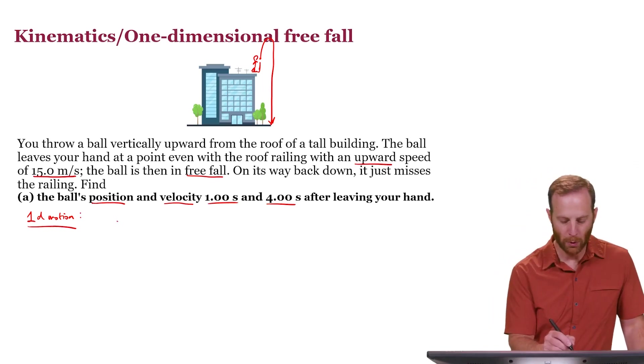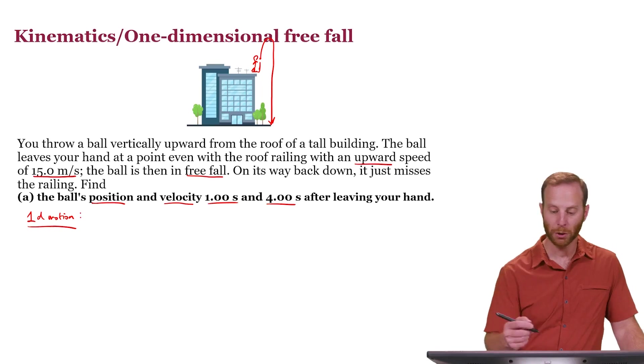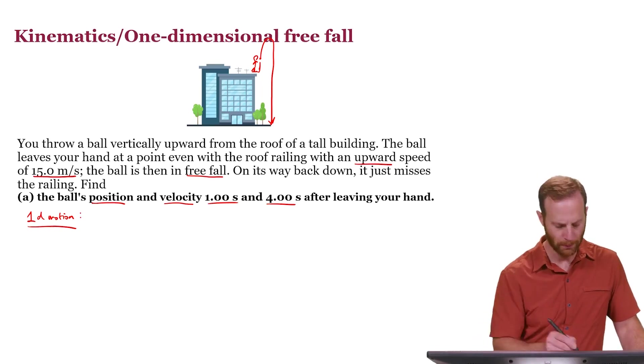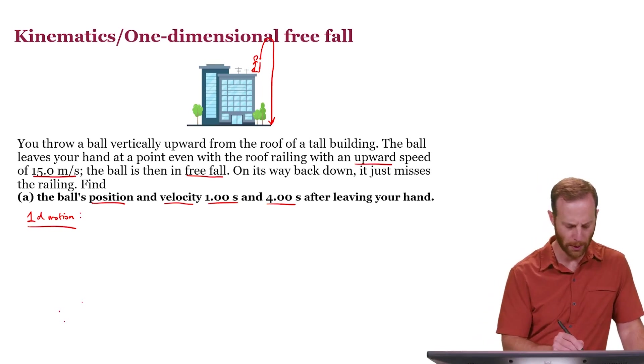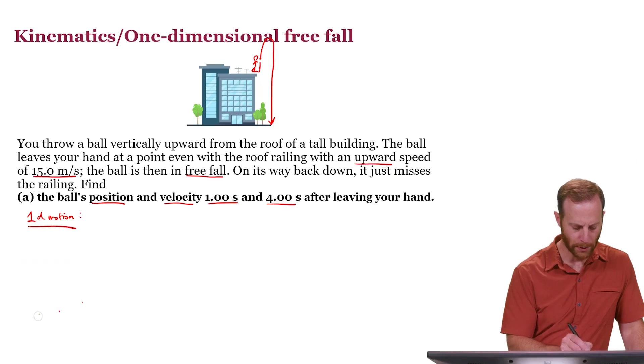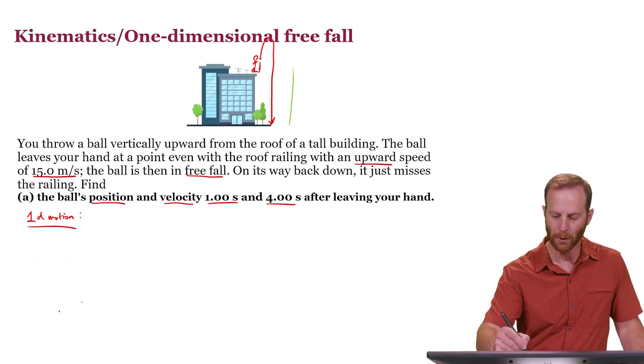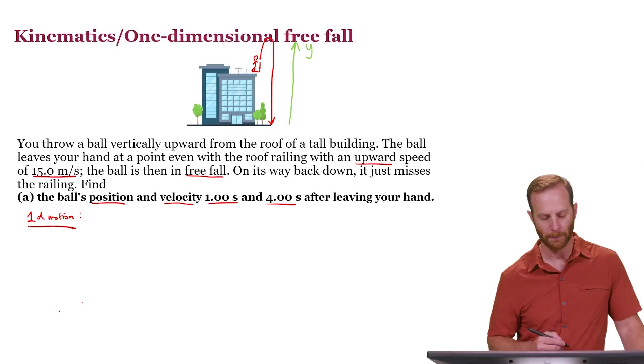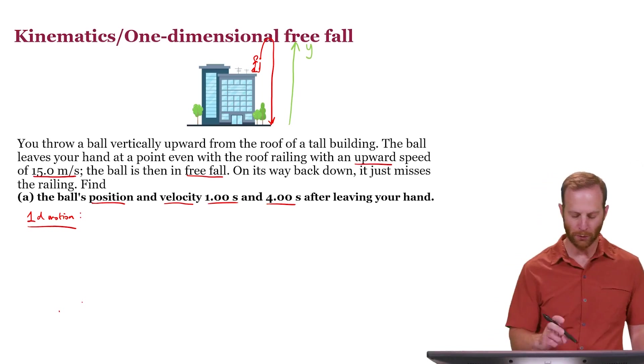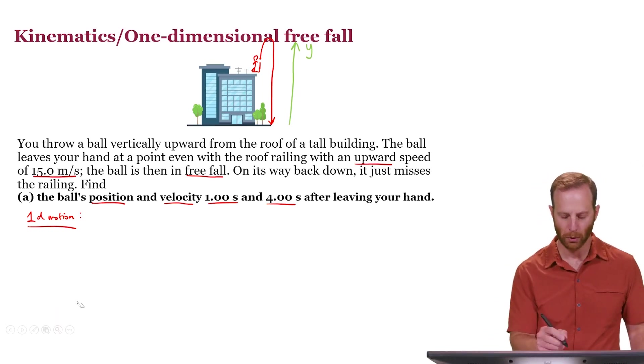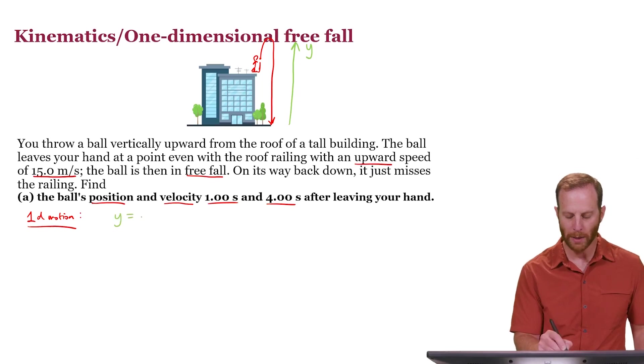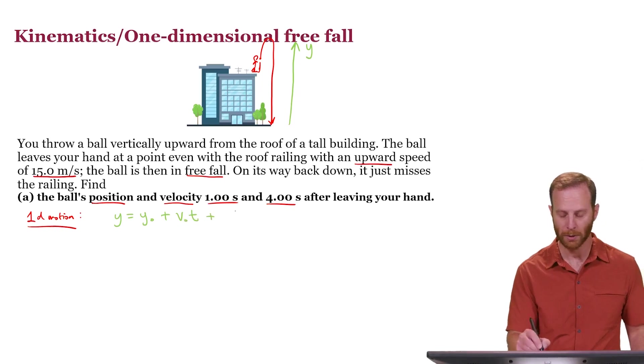One of the equations that we'll use will be relevant to the position of the ball in the vertical direction. So it's worth at this point indicating what our coordinate system is. Let's let the y direction go vertically. And so the equations for one dimensional motion would look something like this. The position y is equal to the initial y position y0 plus the initial y velocity times the time plus a correction term one half times the acceleration times time squared.